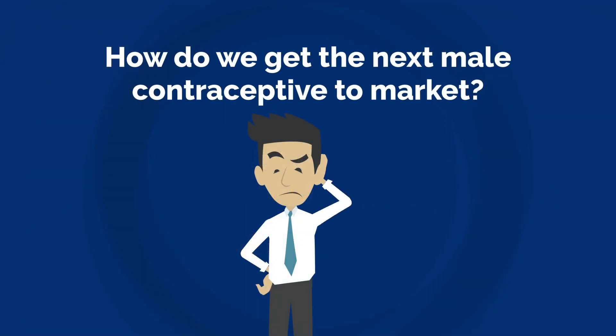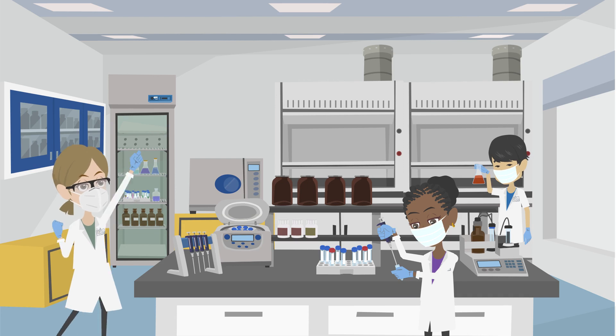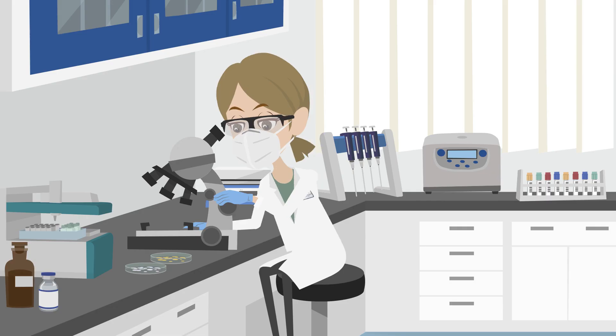What could the pathway for a male contraceptive look like? The aha moment: a researcher in a lab finds some component of reproduction that, when missing, seems to make men infertile. We'll call this the target. But does it work?